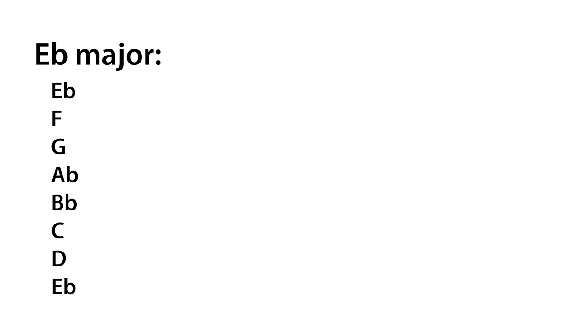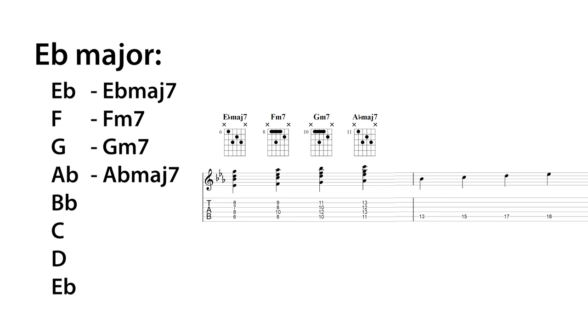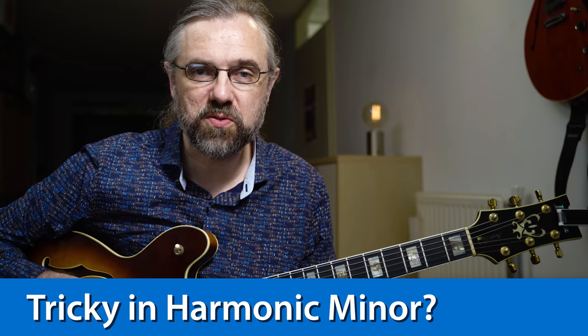For any scale you want to use when improvising, you should also check out the diatonic chords. You can probably already do this in most major keys — so first, try to picture the notes of the scale. If we take E-flat major: E-flat, F, G, A-flat, B-flat, C, D, and E-flat. Now let's add the chords: E-flat major seven, F minor seven, G minor seven, A-flat major seven, B-flat seven, C minor seven, D half-diminished, and E-flat major seven.